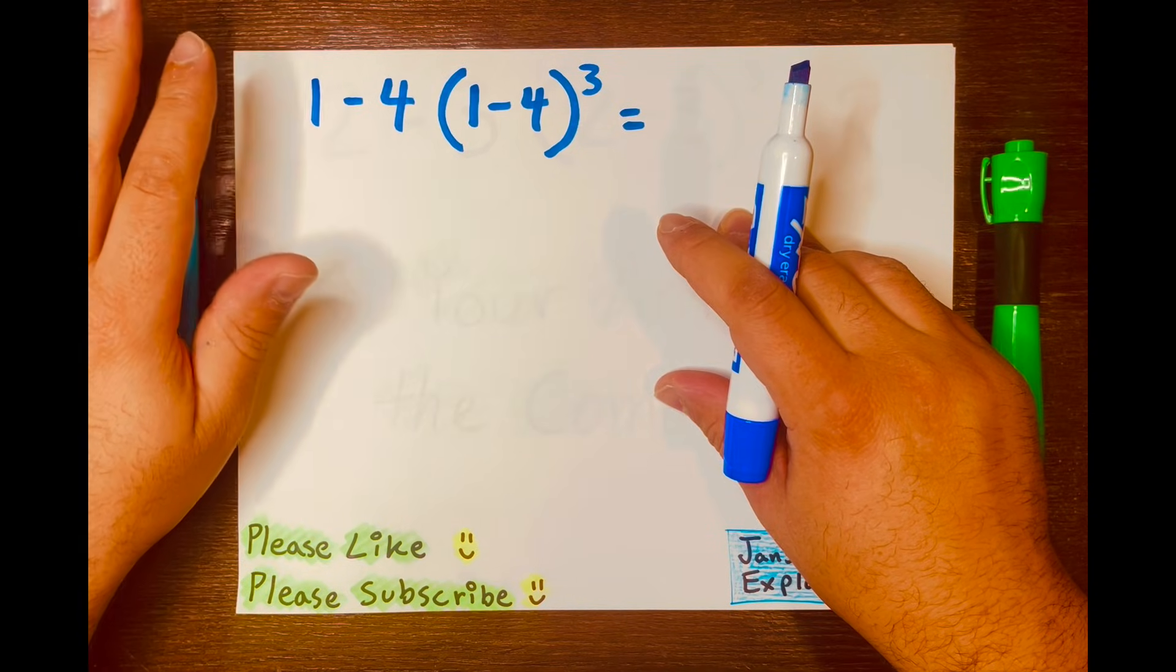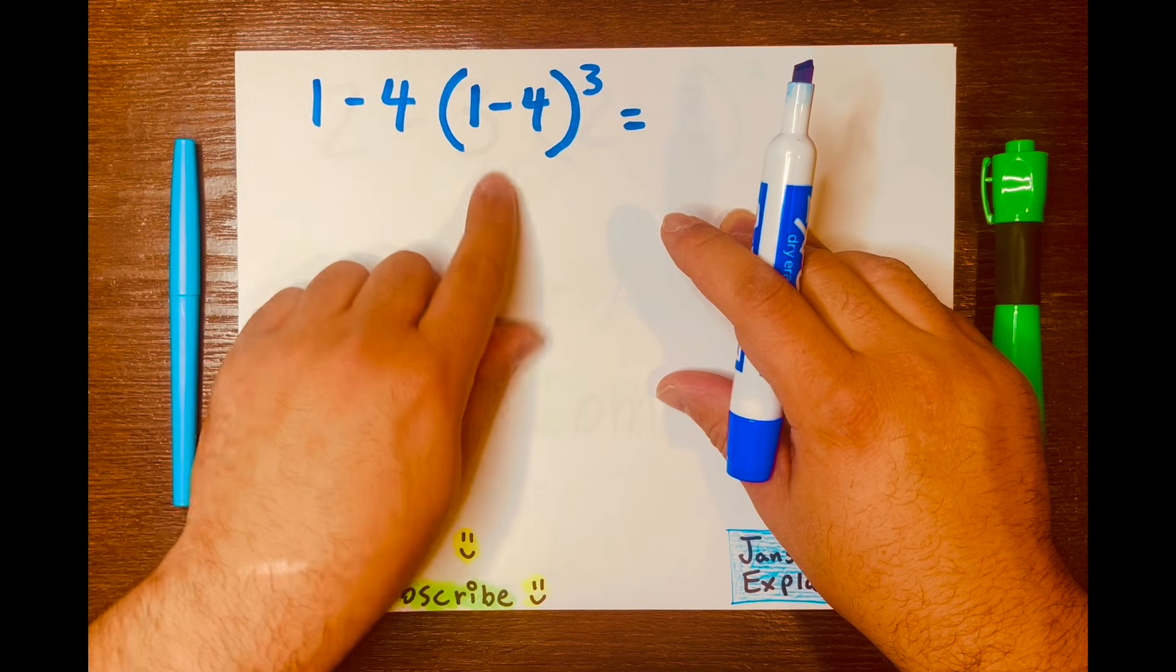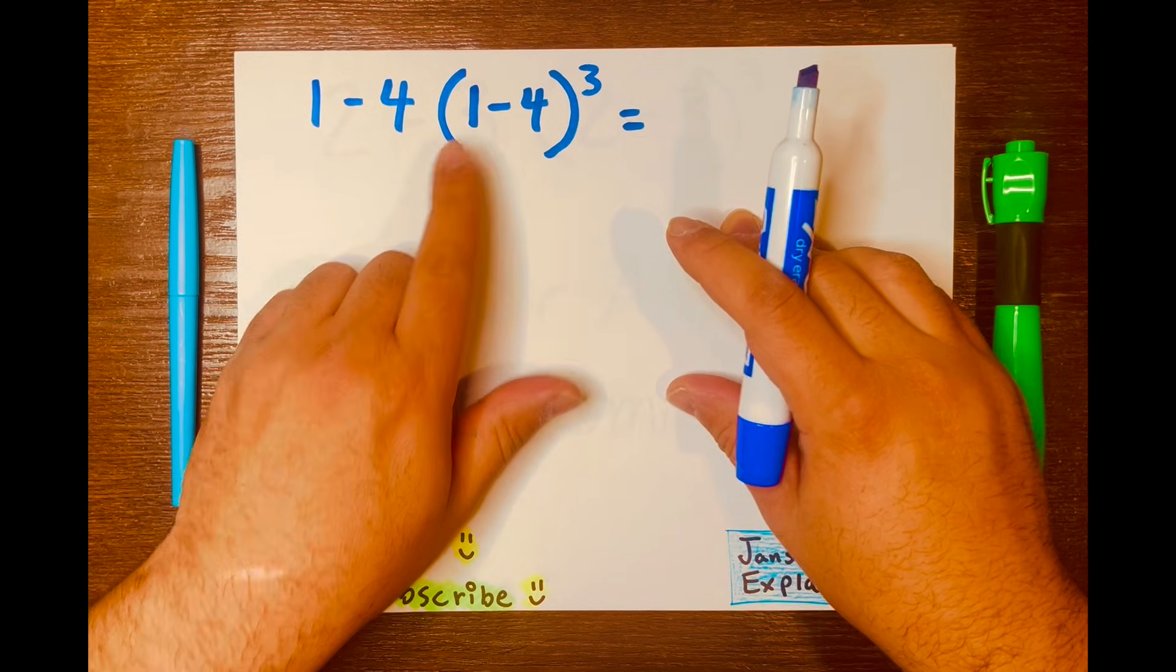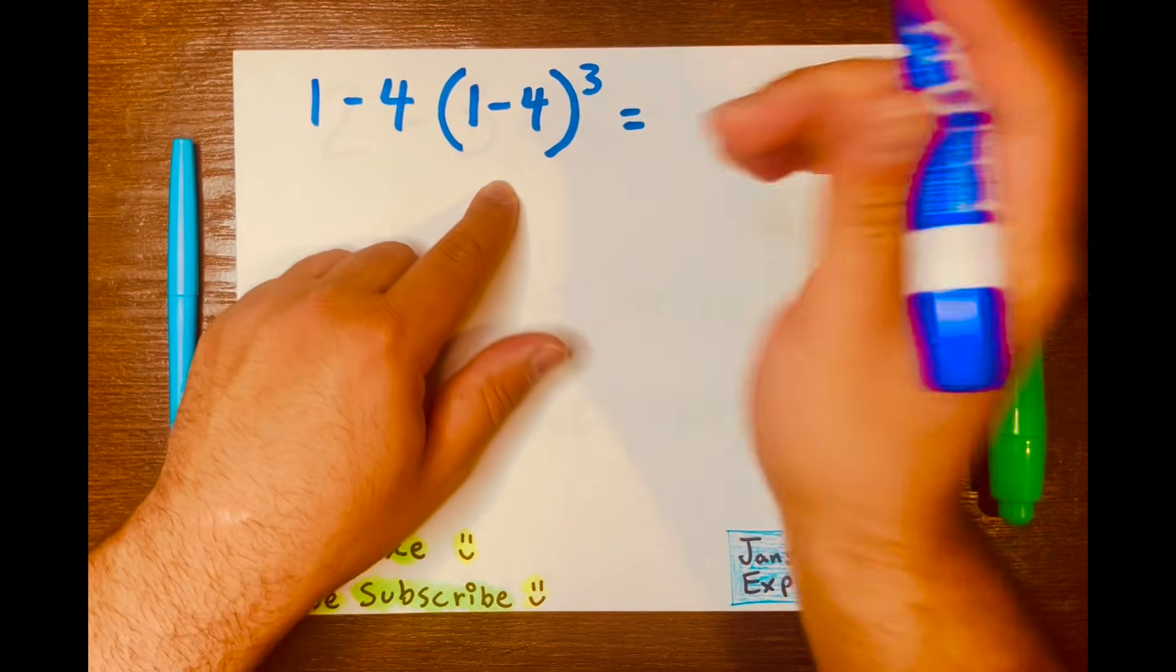Hi everyone. By the end of this video, you'll be able to solve 1 minus 4, and then you have 1 minus 4 inside these parentheses with an exponent of 3.